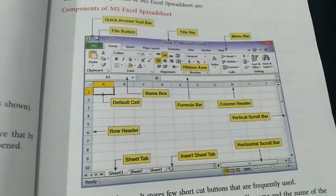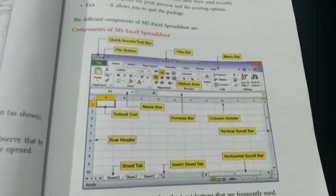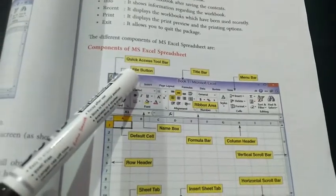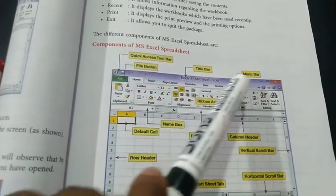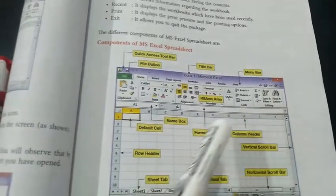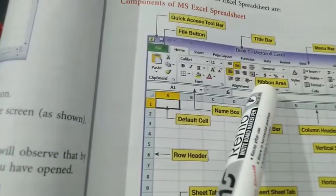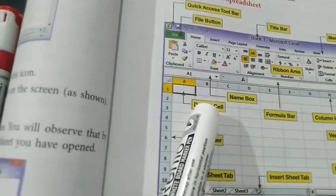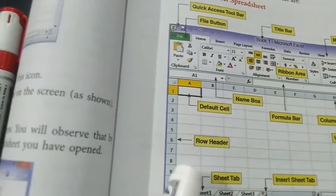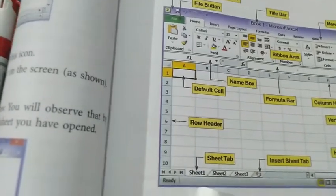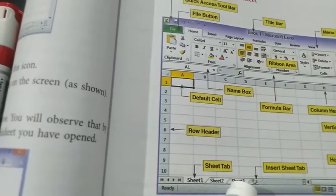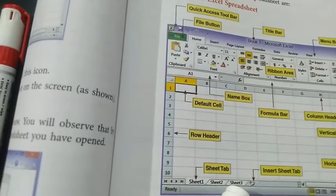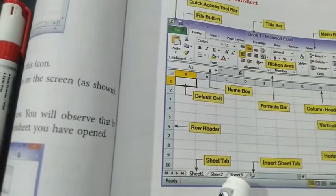There are different components present in the MS Excel window: Quick Access Toolbar, File button, Title Bar, Menu Bar, Ribbon Area, Name Box, default cell, Row Header, and Sheet Tab. All of you see where the Sheet Tab is present — at the bottom. By default, three sheets are present.